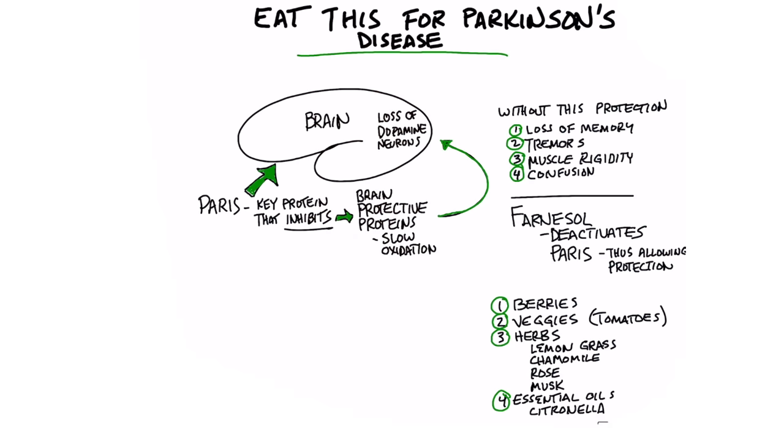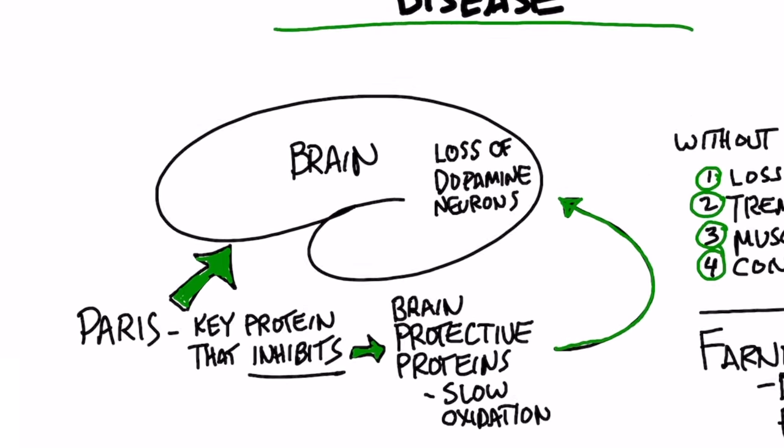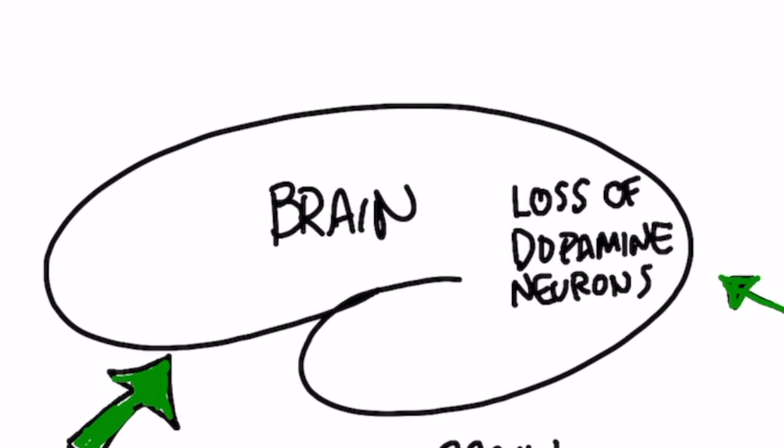So I wanted to create a video on Parkinson's. I have several others, but this one's specifically on certain foods that you should be consuming if you have Parkinson's or want to prevent Parkinson's disease, which involves degeneration of certain neurons in the brain that make dopamine.